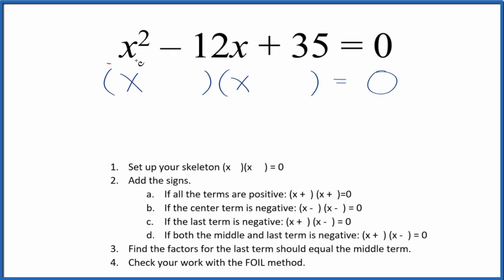If you're asked to factor the equation x squared minus 12x plus 35, here's how you do it. We're going to start out with a skeleton. This is our skeleton here, so that'll help us along.